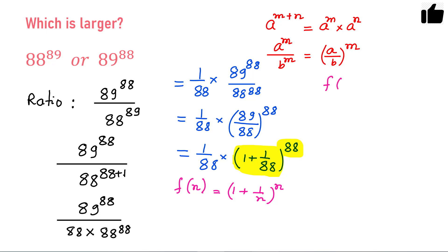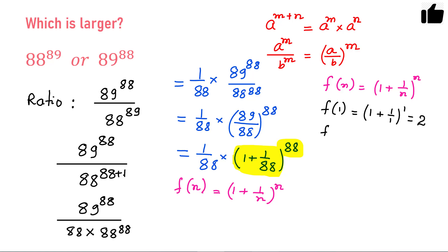We have f(n) equals 1 plus 1 over n raised to the power n. What is the value of f(1)? That is n equals 1. This is 1 plus 1 over 1, raised to the power 1, which equals 2. What is the value of f(2)? That is 1 plus 1 over 2, raised to the power 2 — that is 1.5 squared, which equals 2.25.